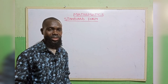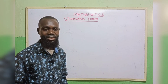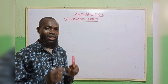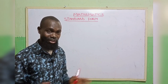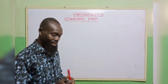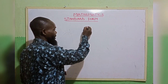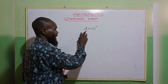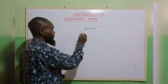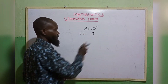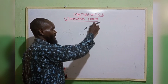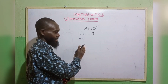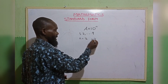A standard form is a method of writing — a scientific method — of reducing the burden of writing larger numbers or smaller numbers. A standard form is of the form a multiplied by 10 raised to the power n, where a is a number from 1 to 9, then multiplied by 10 raised to the power n, where n can be positive or negative numbers — it can be 3, it can be minus 3, or any one.